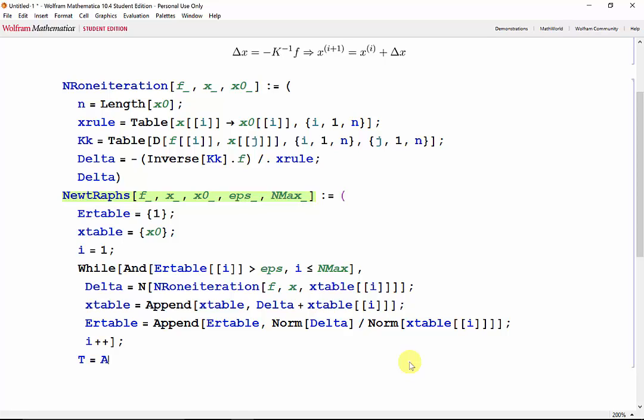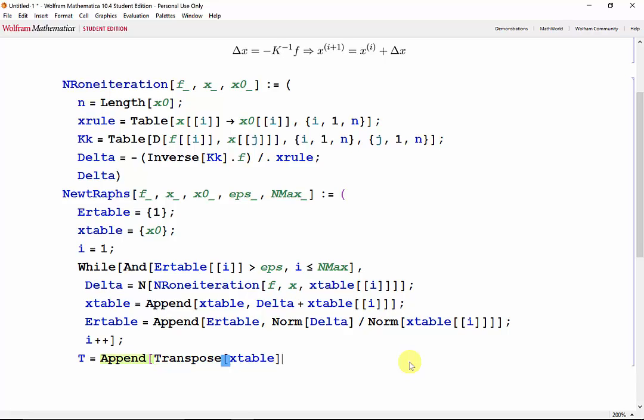So first, we want to append the transpose of x table with error table. Then we want to prepend a table containing our iterators. So d, where d goes from 0 to i-1, which will be the last iteration. And then we'll transpose the whole thing. And we'll have T in matrix form.